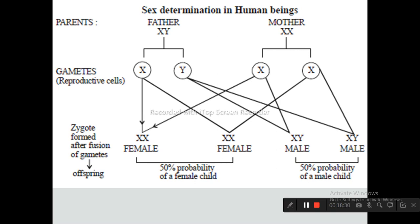The father (male) has XY sex chromosomes whereas the mother (female) has XX sex chromosomes. Since the mother has identical sex chromosomes (XX), females have no role in determining the sex of the child. When the X chromosome of the male fuses with the X chromosome of the female, a female child is formed. When the Y chromosome of the male fuses with the X chromosome of the female, a male child is formed. This completes the topic of chromosomes under the unit of heredity.